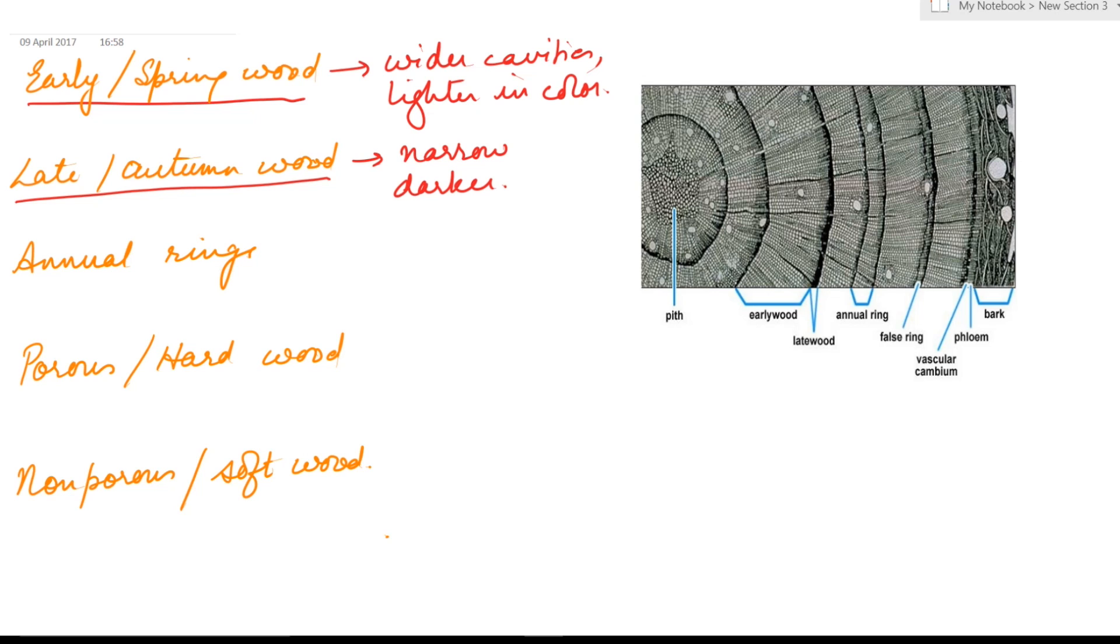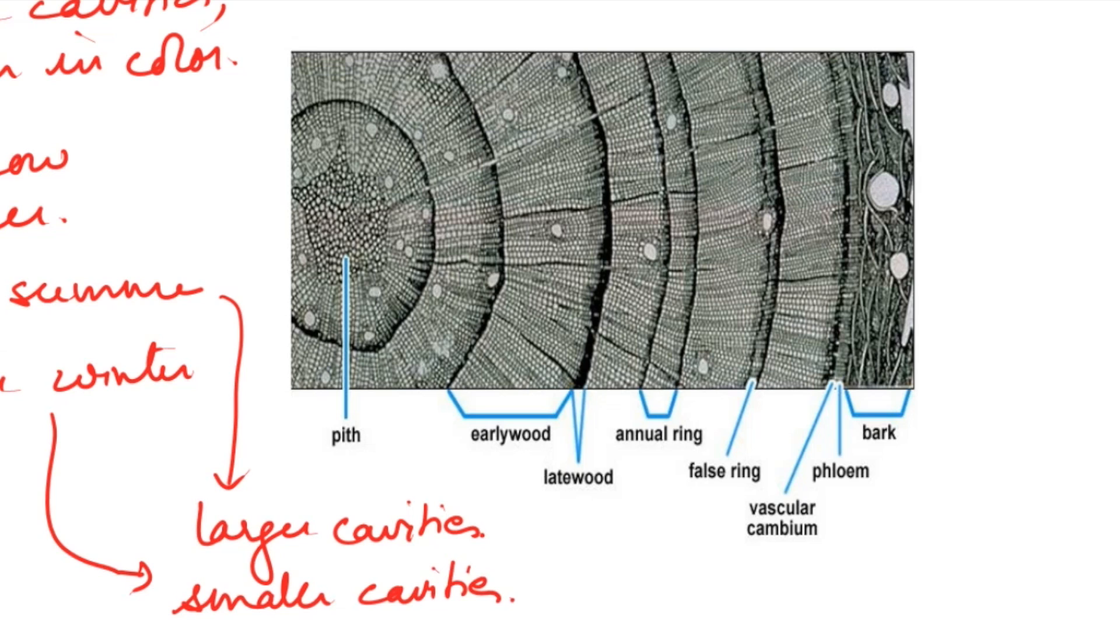Now in case of plants growing in regions where there are severe summers and severe winters, a ring of vessels are produced in the summer that have larger cavities. This is the spring wood. And the ring of vessels produced in the winter have smaller cavities. This is the late wood. Together, the two layers form the annual rings.